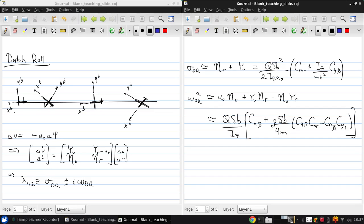These side force derivatives, derivatives with respect to beta, are estimated using a force analysis on the vertical tail. So, we take Cᵧᵦ is negative Sᵥ/S times Cₗ_α of the vertical tail. And Cᵧᵣ is negative 2 times the vertical tail volume coefficient times Cₗ_α of the vertical tail.